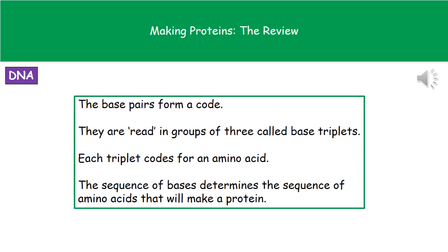Depending on what sequence the bases actually occur in in our DNA, that's going to decide which amino acids join up in what sequence. And that's what makes all those different proteins — the different sequence of bases leads to different amino acids joining together, and that leads to the different protein being made.